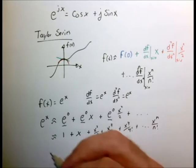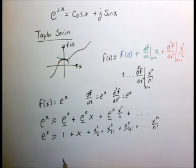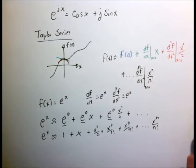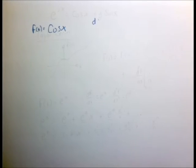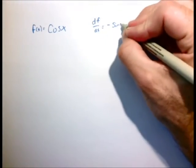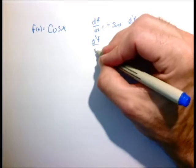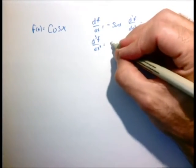This approximation for e to the x gets better and better as we add more terms. It's only accurate near x equals zero — the further away we get, the less accurate it is, unless we include an infinite number of terms. Now let's do cosine of x. In this case, df dx is minus sine of x, the second derivative is minus cosine of x, the third derivative is sine of x, and so on.